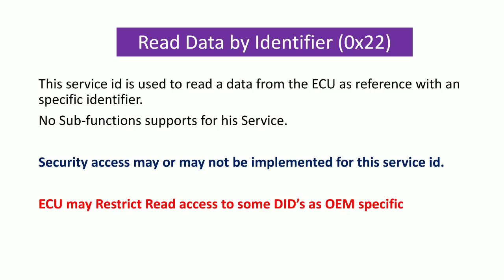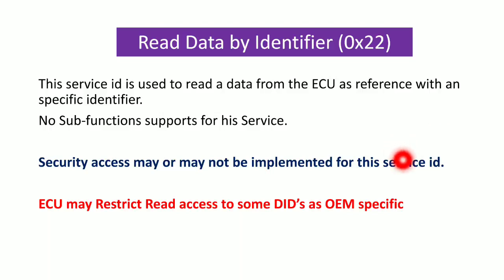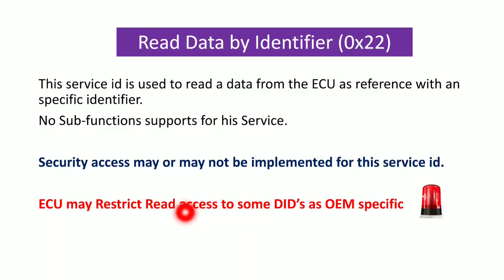Read Data by Identifier is also more or less the same flow. It is used to read data from the ECU using a specified identifier. No sub-function is used for this service. Security Access may or may not be required as per the UDS ISO standard, but our car manufacturer requires Security Access to be implemented.